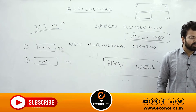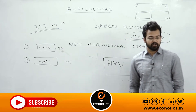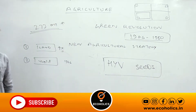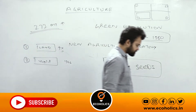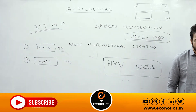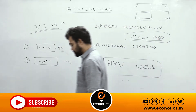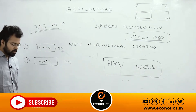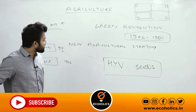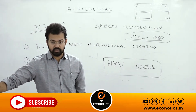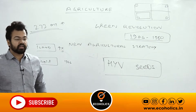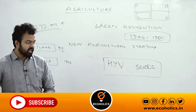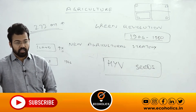During this time, the agricultural growth rate was around 2%. The potential growth rate in agriculture is 4%, but India achieved only 2%. Later, a new agriculture policy was initiated in the year 2000, and after 2000, the agriculture growth rate started increasing.